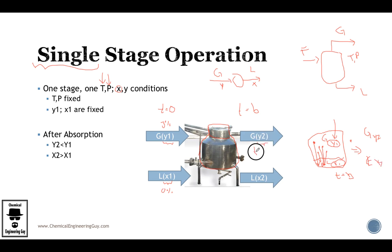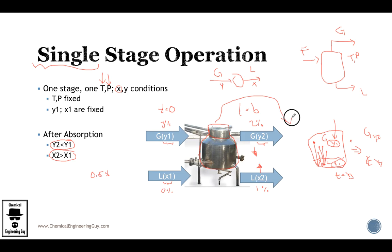Y decreases because some material has gone to the liquid phase, and X must increase. The gas is getting leaner — getting clean — and the liquid is absorbing the solute, so its concentration must increase. This is a good absorption process, but what if we want to remove more? Say we went from 3% to 2% to 1%, but we want a final gas-phase concentration of maybe 0.5% — we need more separation.